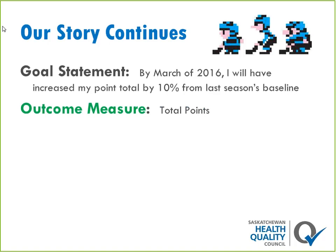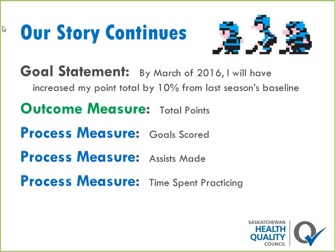For my process measure, I want to think about what action might determine the total amount of points I get. Here's what I was thinking: goals scored — the number of times I put the puck in the net; assists — the number of times I pass to someone else who scores; and time spent practicing. I chose these because if I improve my goals or assists, or spend more time practicing, I'll score more points, which makes me a better hockey player, helping achieve the overall outcome of winning a championship.